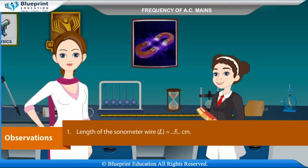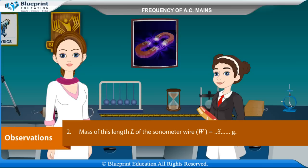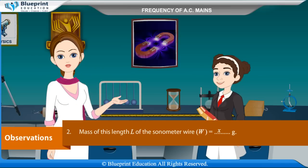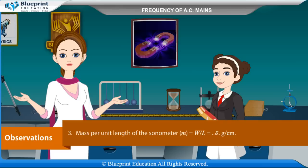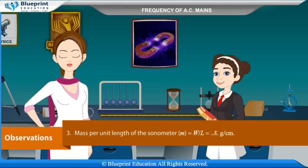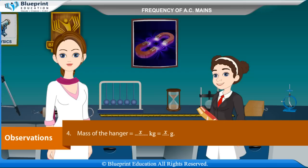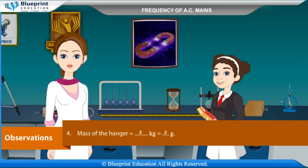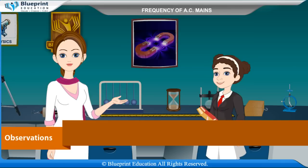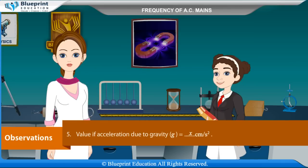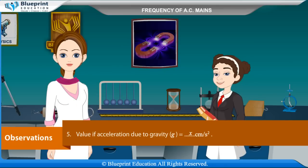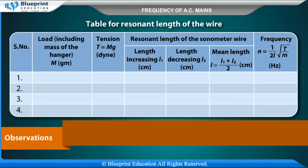Observations: Length of the sonometer wire L = x cm. Mass of this length L of the sonometer wire W = x g. Mass per unit length of the sonometer wire M = W/L = x g/cm. Mass of the hanger = x kg = x g. Value of acceleration due to gravity g = x cm/s².